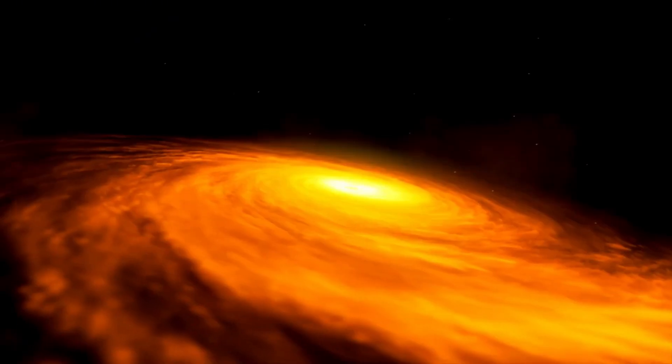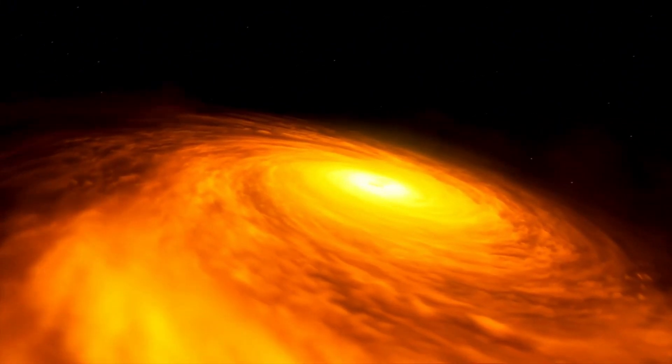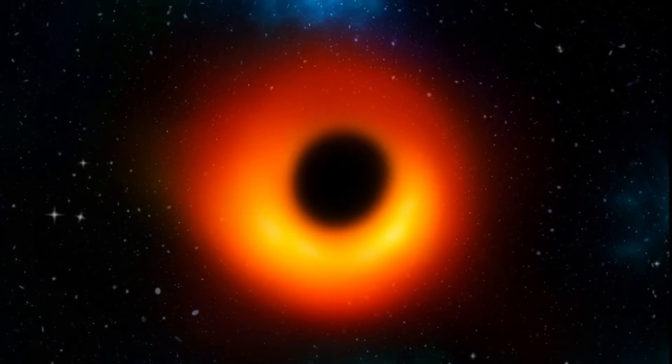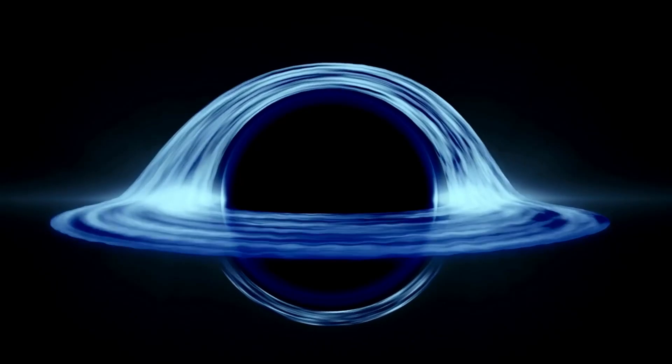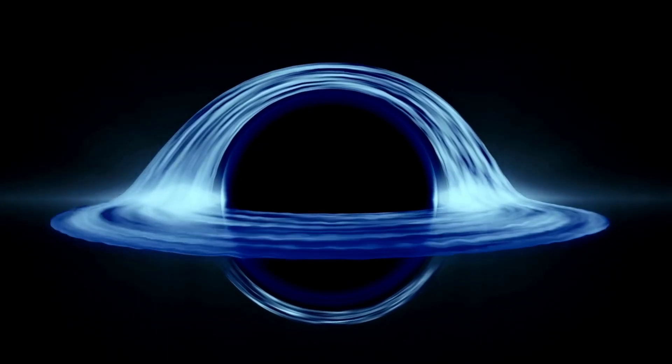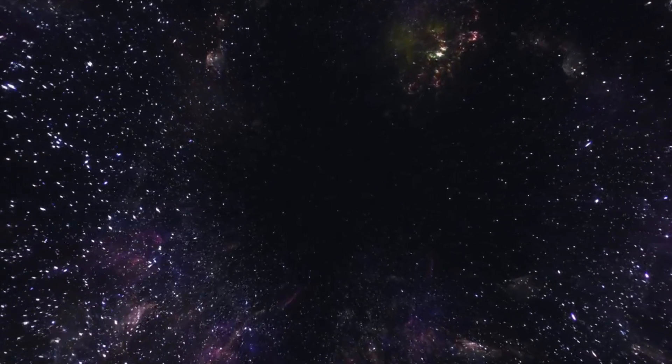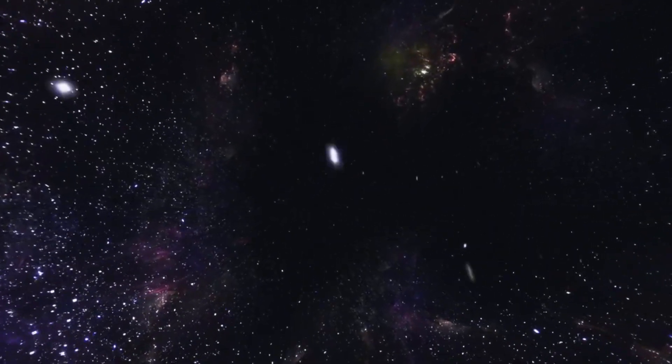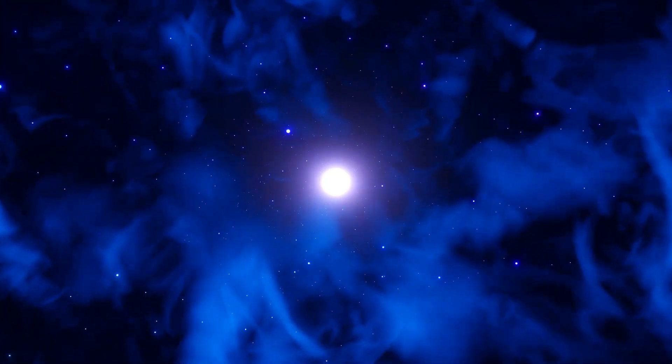The recent discovery is challenging our current understanding of black holes. Traditionally, black holes have been considered massive objects that consume everything, including light. However, this particular black hole seems to be doing the opposite. It appears to be generating new young stars along a vast trail. Astronomers have detected a series of newly formed stars trailing behind this black hole, which stretches an incredible 200,000 light years from its location. Scientists are baffled by this unusual behavior, which differs from what we have typically observed in other black holes.